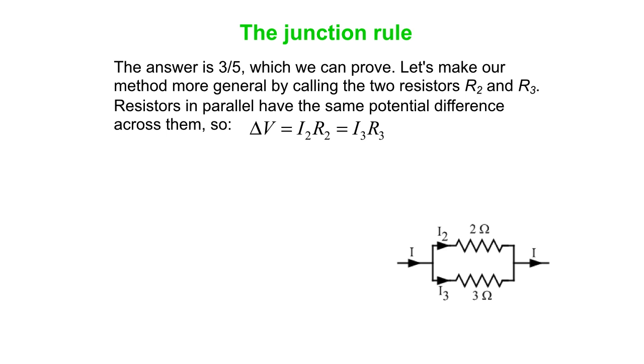So, let's just make, we'll do a general analysis here. Instead of doing a 2 ohm and a 3 ohm, a specific case, we'll do R2 and R3 in parallel. We'll do the more general case. What we know about resistors in parallel is that they have the same potential difference across them. So, that means delta V is IR, and you can use IR for either resistor. So, delta V across that parallel pair is I2R2. It's also I3R3. So there's one equation we've got.